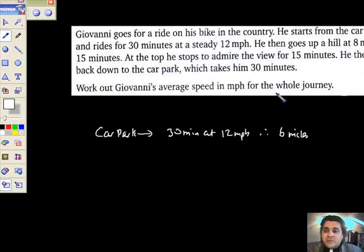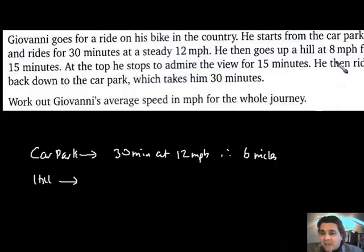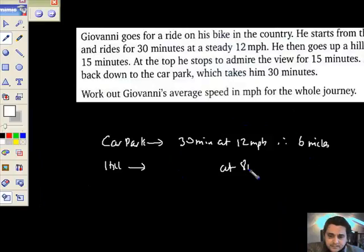He then goes up a hill, so you reach a hill now. So we've been traveling for half an hour, we've gone 6 miles, and now we've reached the hill. So what's happening? He goes up that hill at 8 miles per hour and it took him 15 minutes to do that.